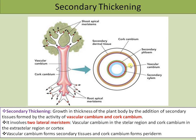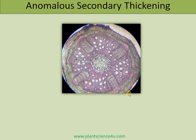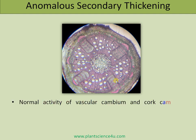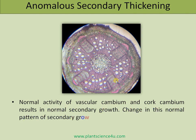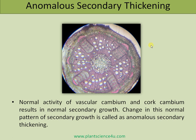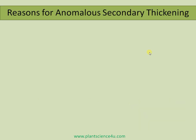Both cambiums are responsible for secondary growth in dicot plants. Anomalous secondary thickening refers to any deviation from the normal growth pattern. Normal activity of vascular cambium and cork cambium results in normal secondary growth, and any deviation from this normal pattern of growth is considered as anomalous secondary thickening.